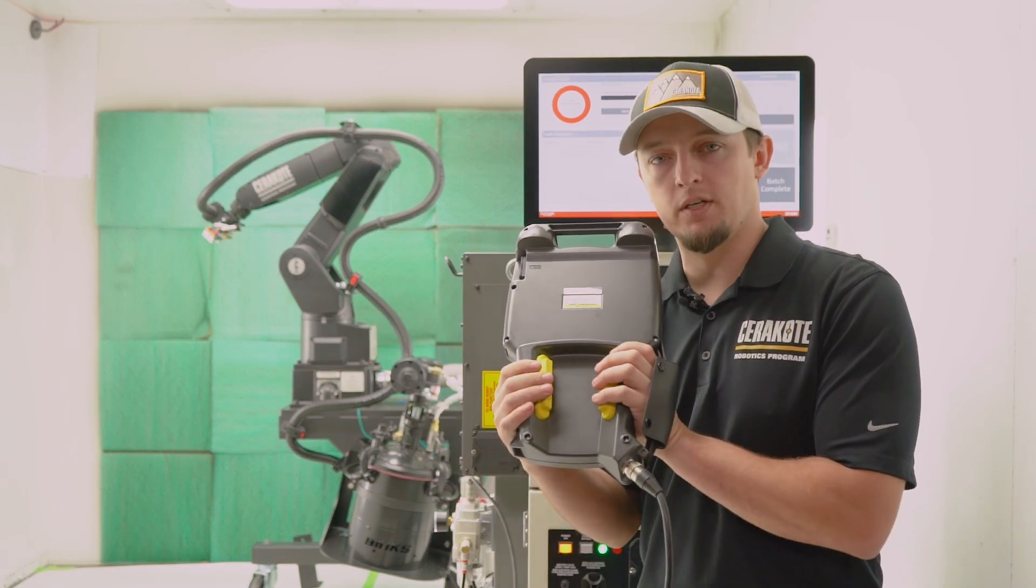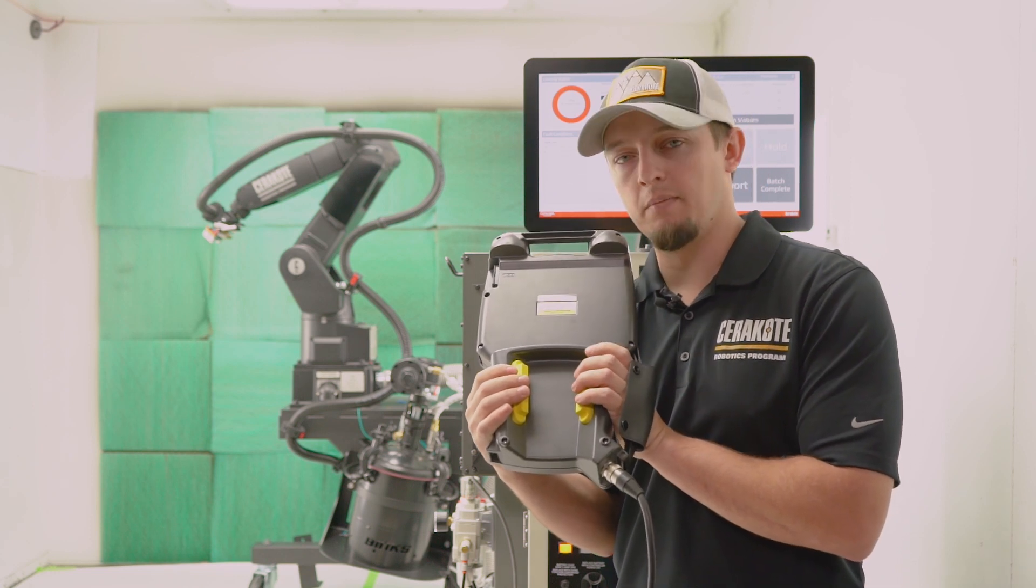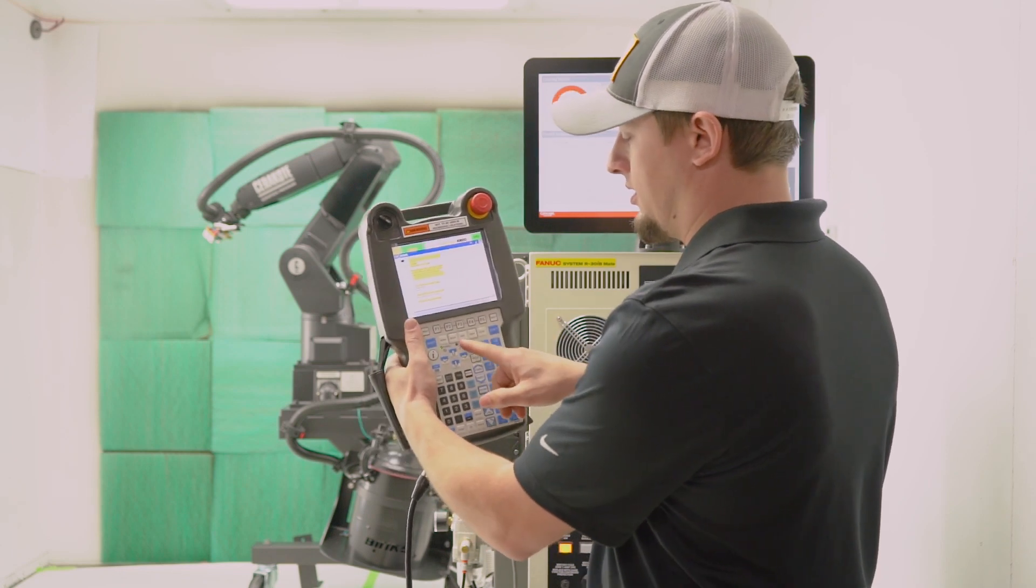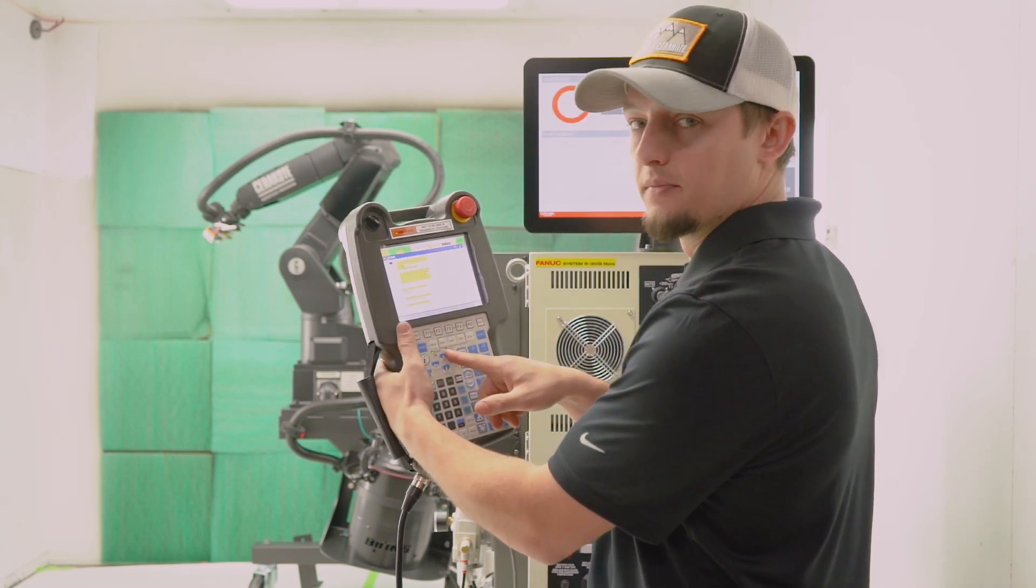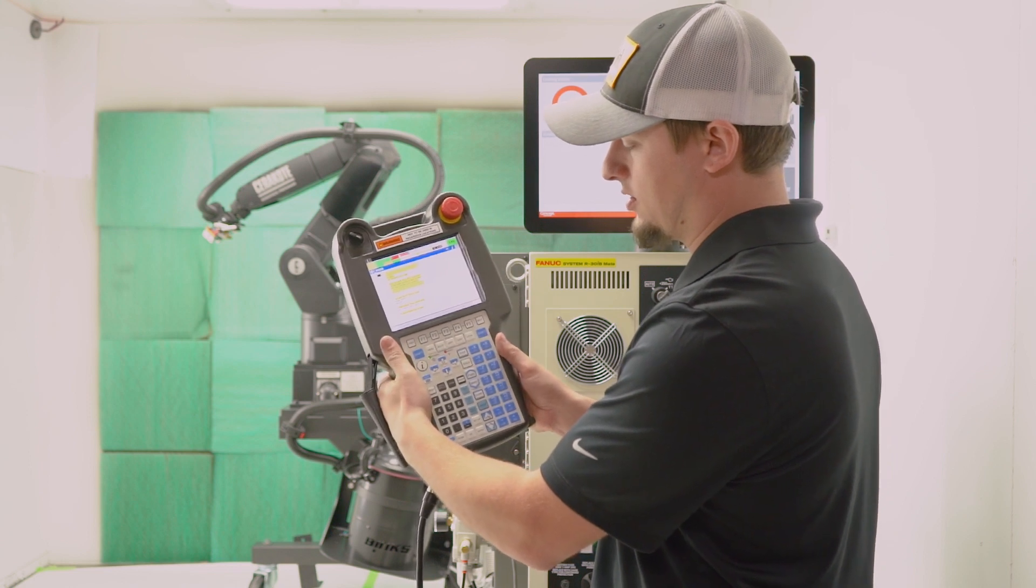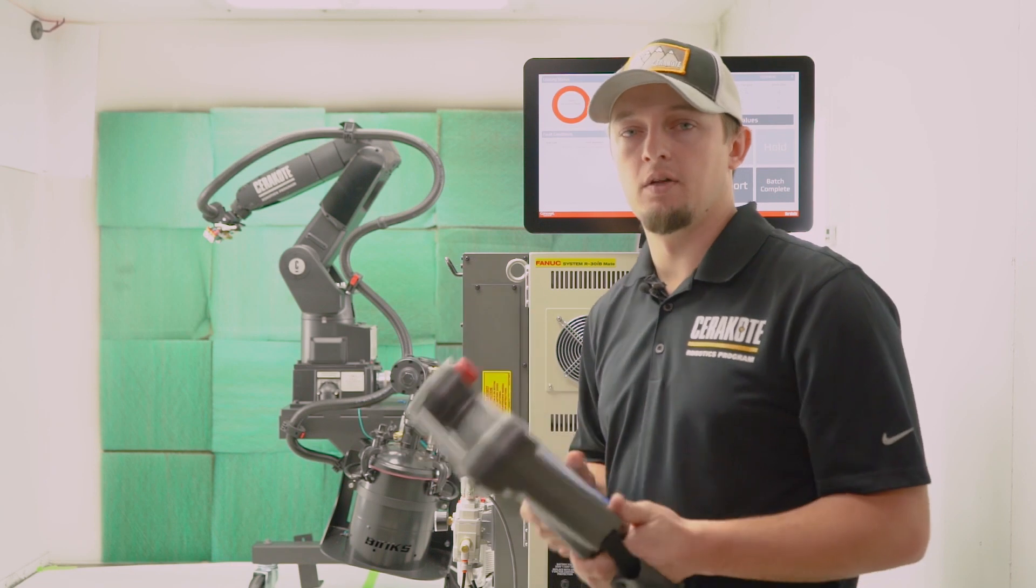Then we're going to depress the dead man switch, and remember guys, this is a three-position switch, so ensure that you're holding it in the middle and you hear the audible click from the robot and you see your fault light has cleared. If that fault light is present, it means you have that depressed incorrectly. Now if you get scared, you can squeeze or you can let go and that will kill the movement of the robot.